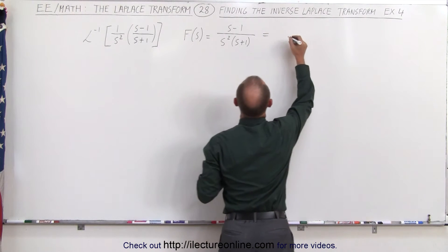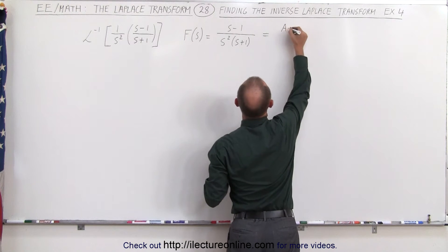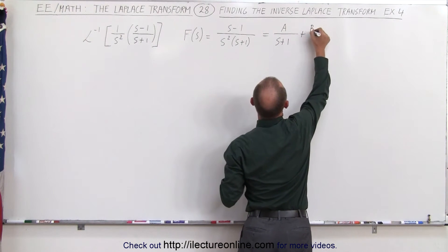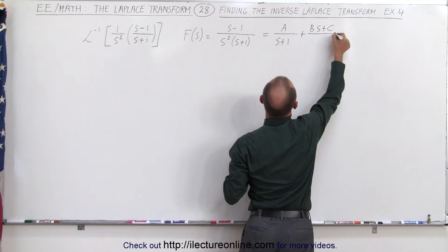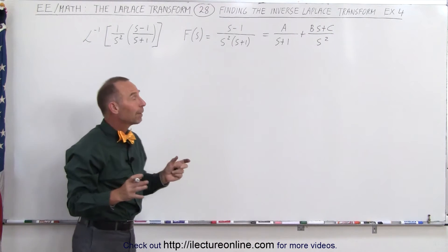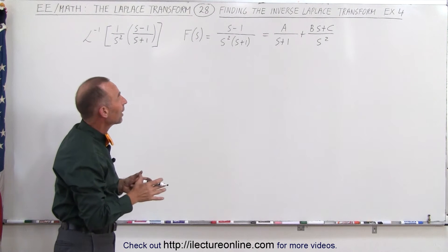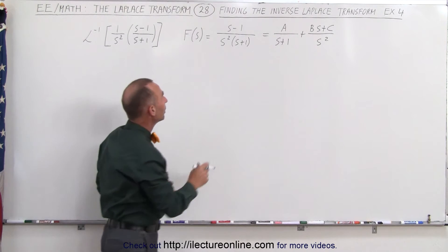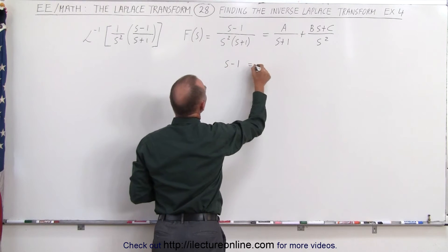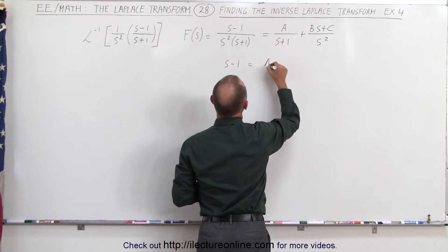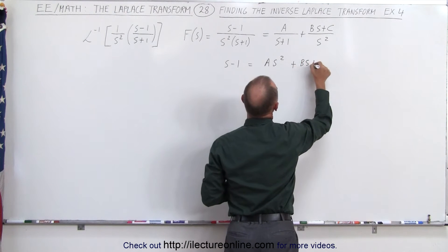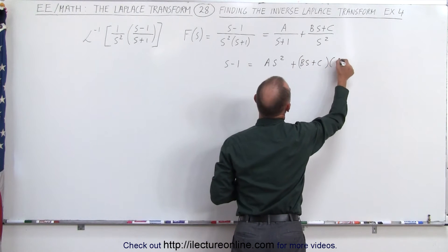So this can be written as A over s plus one, plus Bs plus C over s squared. Now we're going to multiply both sides of the equation by the common denominator s squared times s plus one. So we can see on the left side we get s minus one equals A s squared plus Bs plus C times s plus one.